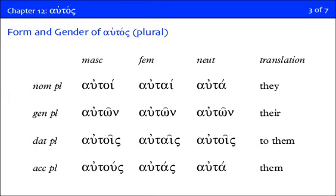Once we get into the plural of autos, you'll notice a difference between Greek and English. In Greek, we still have gender. In English, we don't — we say 'they' whether it's a group of men, women, or mixed. But Greek maintains its gender differentiation in the plural, and the same rules apply: is it referring to a person or not? Is it following natural gender or grammatical gender?